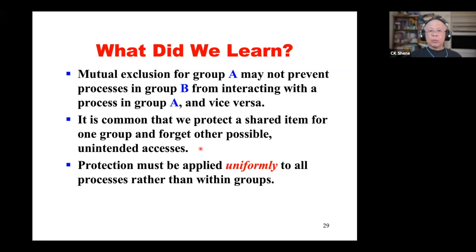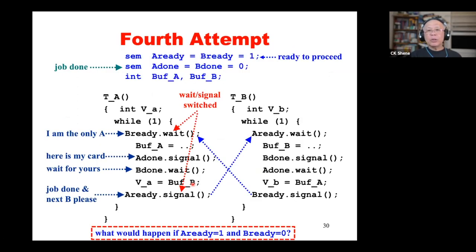What did we learn? Mutual exclusion for group A may not prevent processes in group B from interacting with a process in A twice. A process in group B could interact with the same process in group A twice. It's common to protect shared items from one group but forget other possible unintended access — the fast runner coming back and ruining things. Protection must be applied uniformly to all processes, not just within groups.